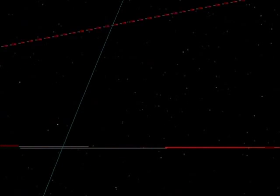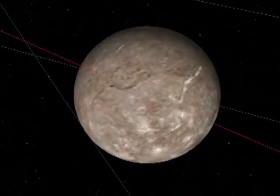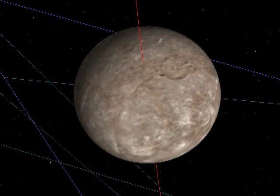Next one in is Titania. By the way, they're all named after Shakespeare's characters, and also characters from The Rape of the Lock by Alexander Pope. There's another liquid ocean inside that one.